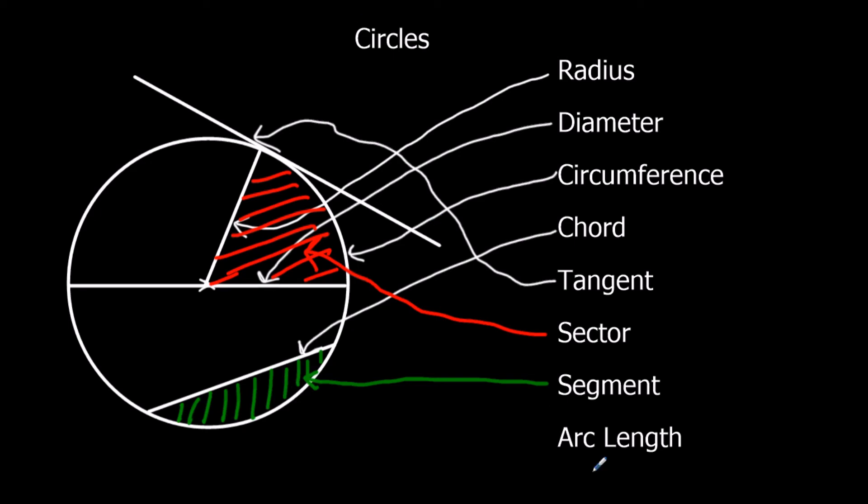And an arc length finally. So when you have a sector, what you have is you have part of the circumference cut off. And that is called an arc length. So the part of the circumference is called an arc length.